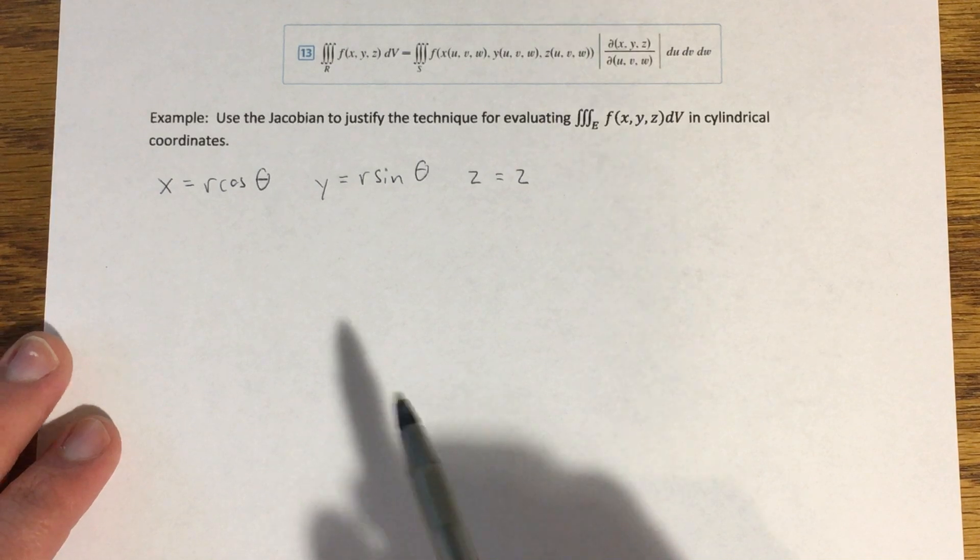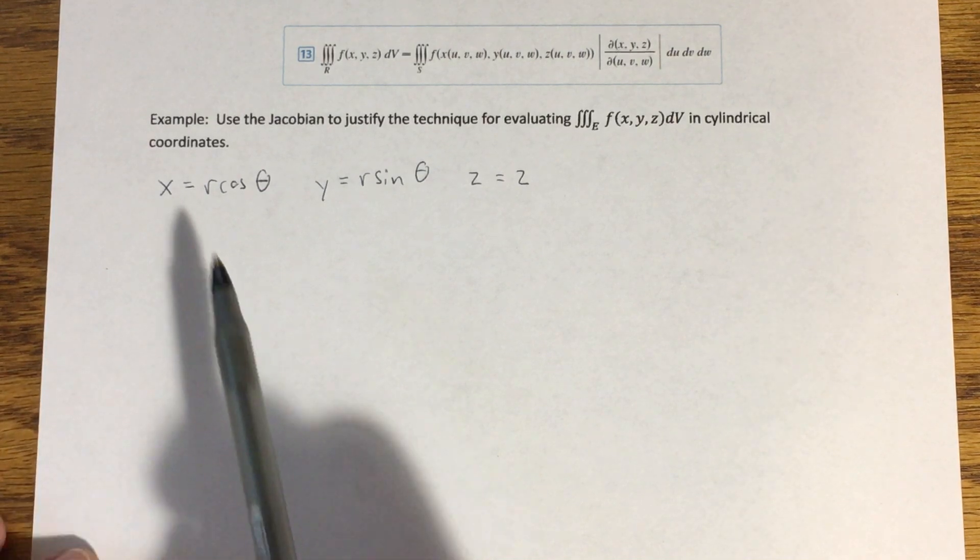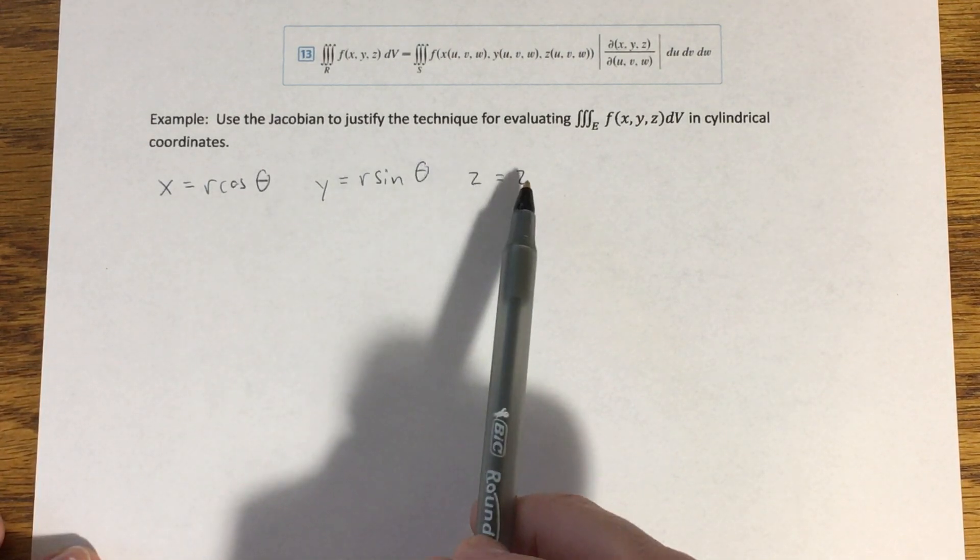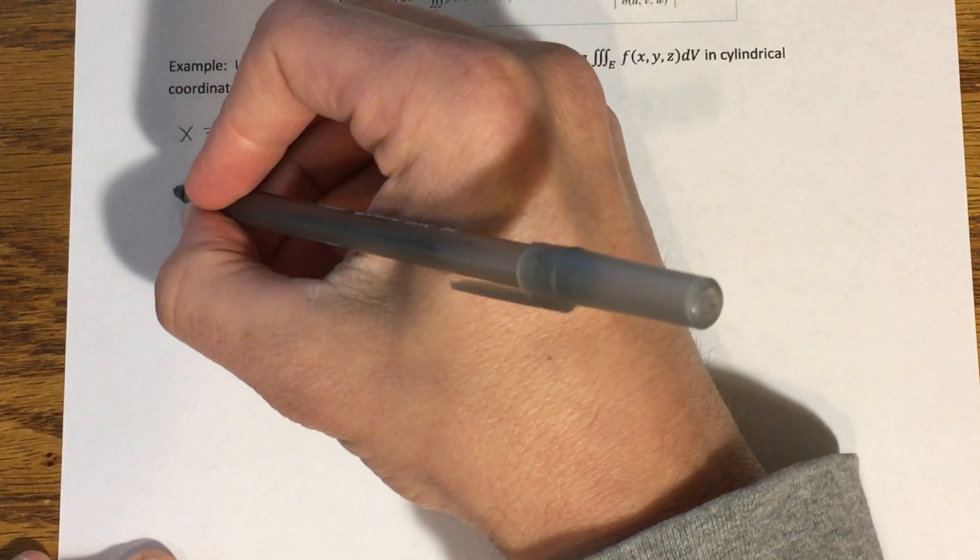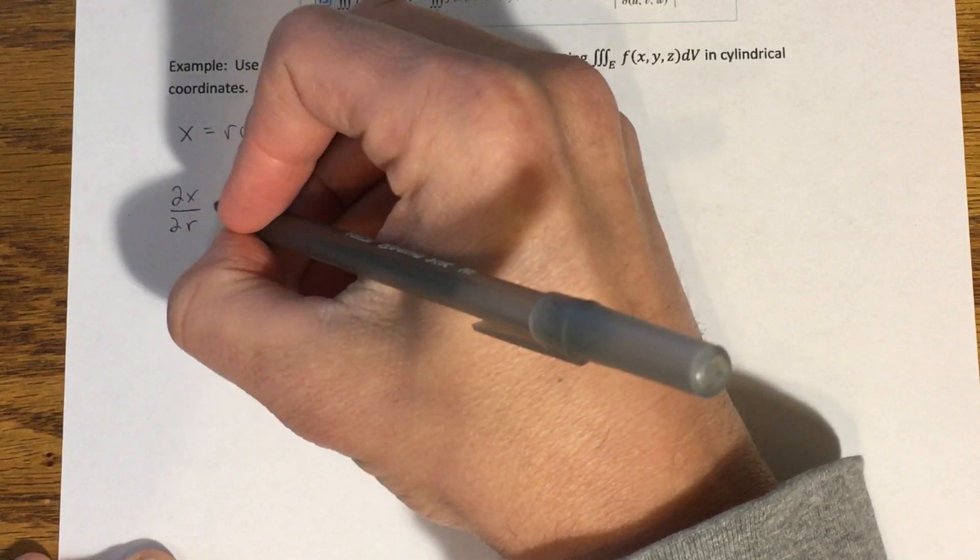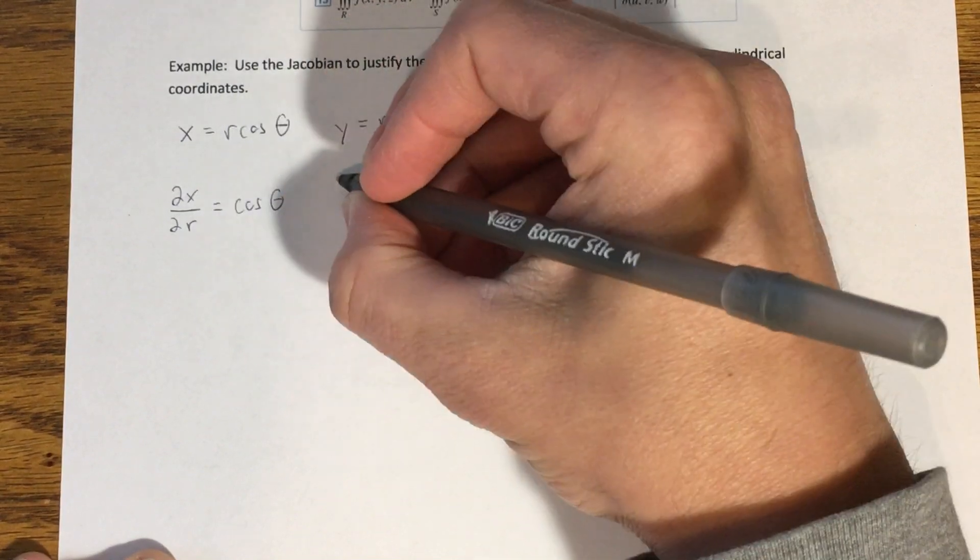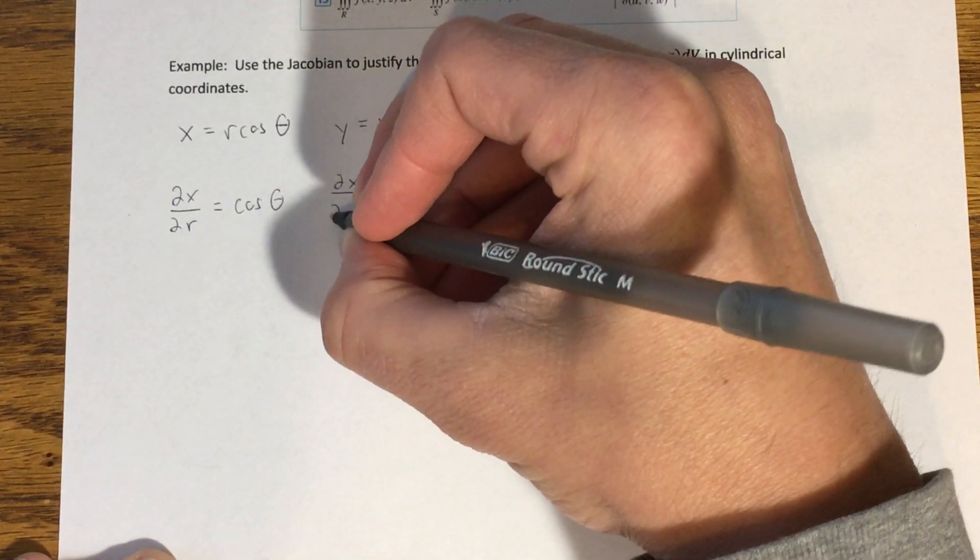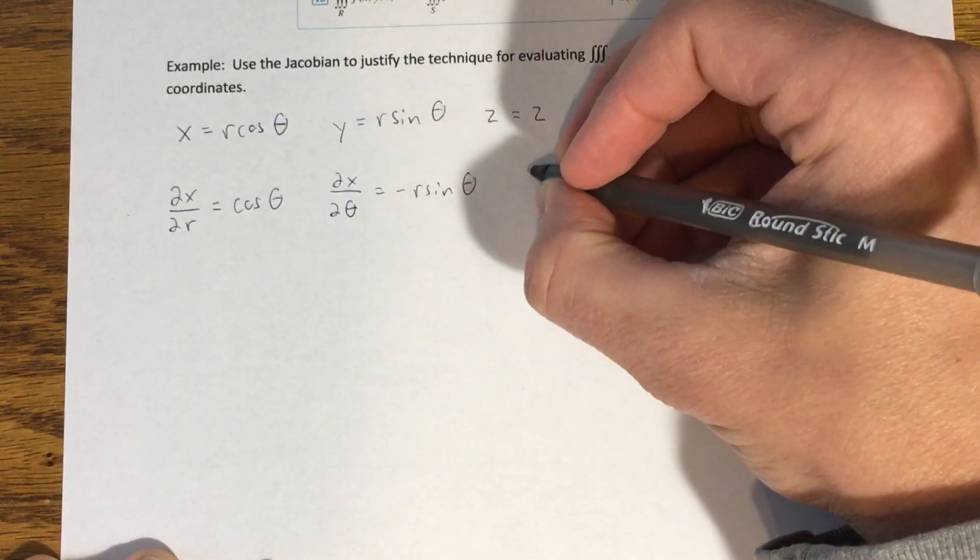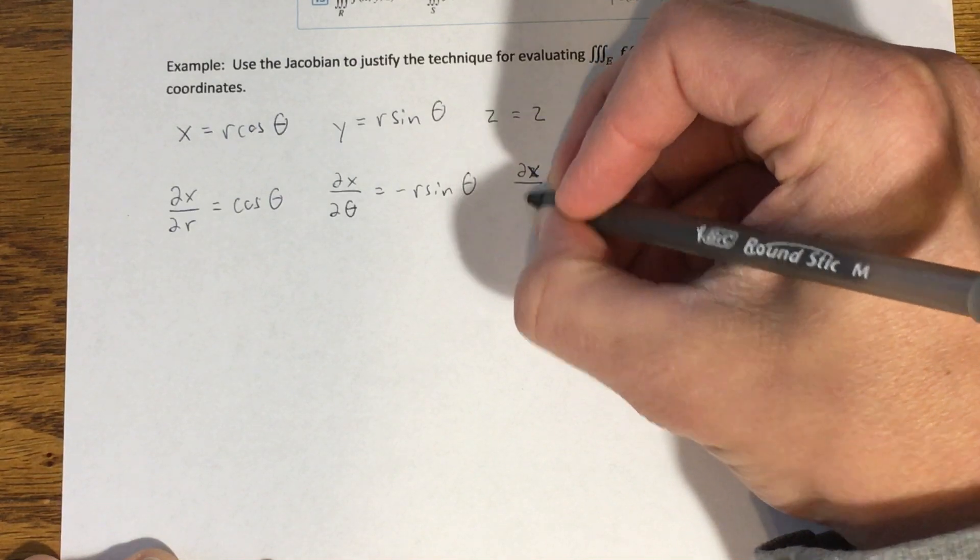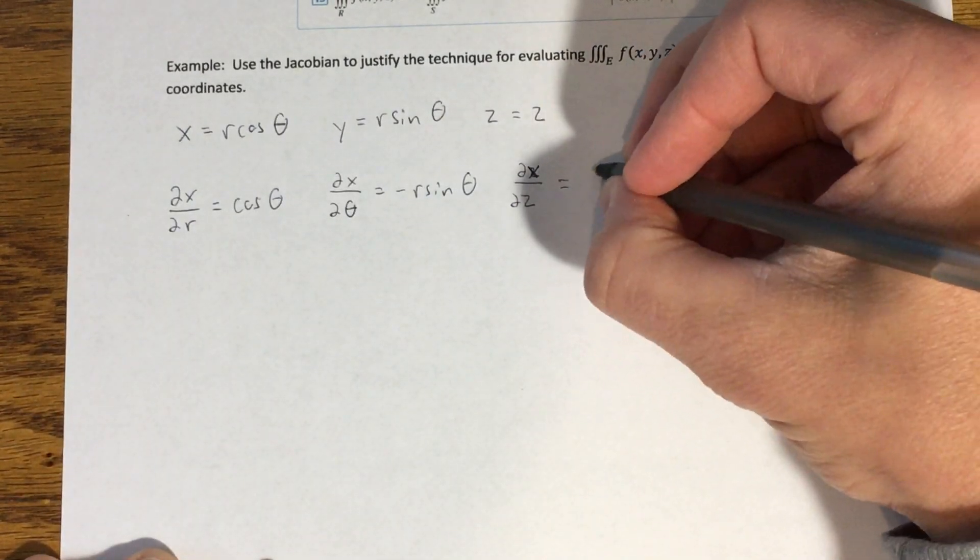So we need nine partial derivatives, the partial of each one of these with respect to the three variables r, theta, and z instead of u, v, and w. Okay? So partial of x with respect to r would be cosine of theta. Partial of x with respect to theta is going to equal negative r sine of theta. Partial of x with respect to z, there is no z here, so this is treated like a constant, and this comes out to just zero.